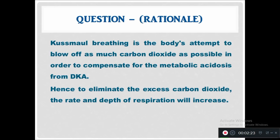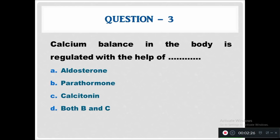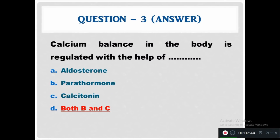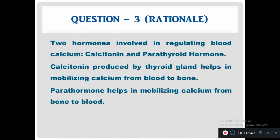Question 3: Calcium balance in the body is regulated with the help of? Option A: aldosterone. Option B: parathormone. Option C: calcitonin. Option D: both B and C. The answer is both B and C — parathormone and calcitonin. The rationale: calcitonin, produced by the thyroid gland, helps in mobilizing calcium from blood to bone, whereas parathormone helps in mobilizing calcium from bone to blood.